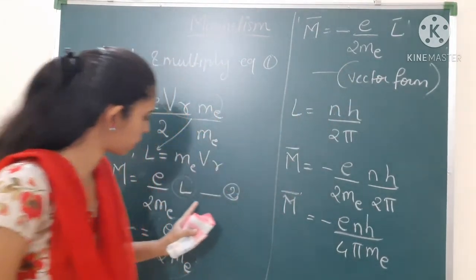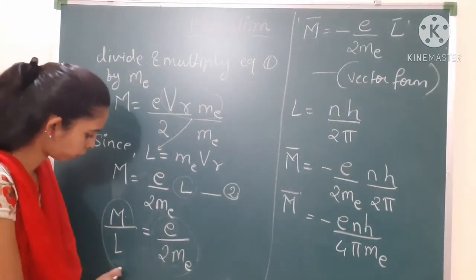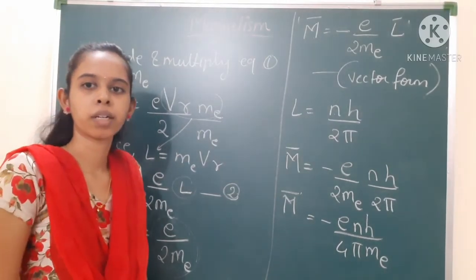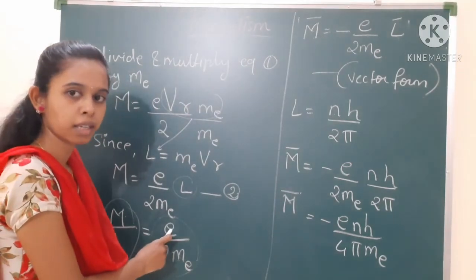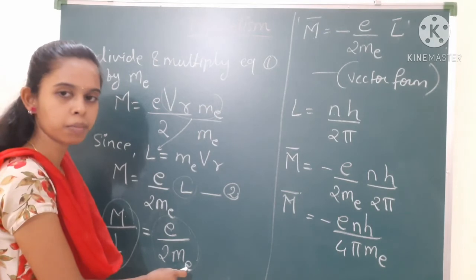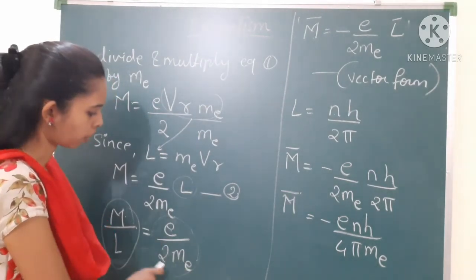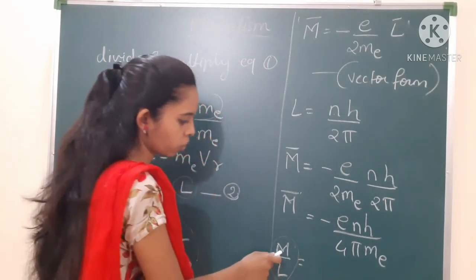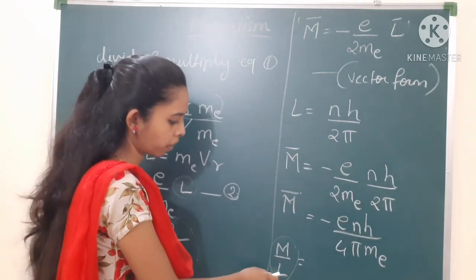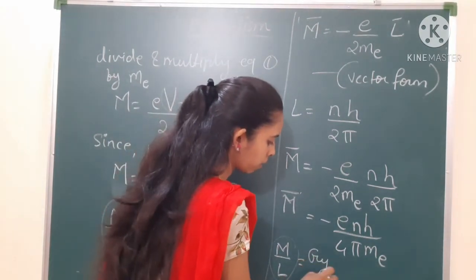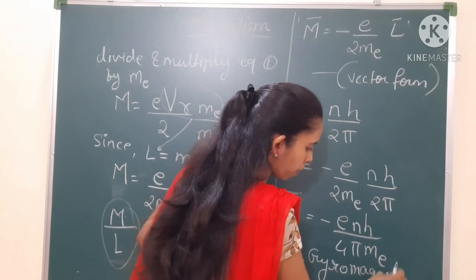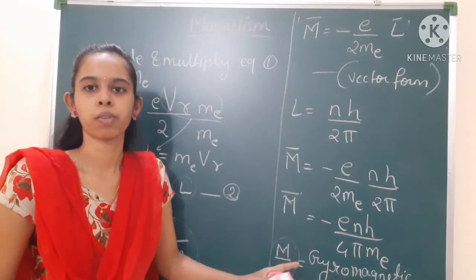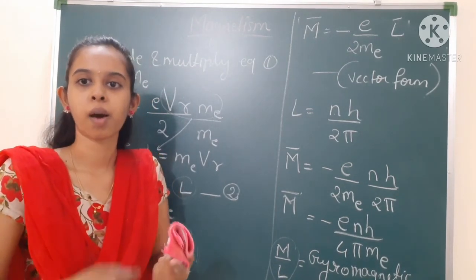The gyromagnetic ratio M/L is the ratio of magnetic moment to angular momentum, and it equals e/(2m). If you solve this — where e is the charge of the electron and m is the mass of the electron — you will get the constant value 8.8 × 10¹⁰. This is all about the magnetic moment of an electron moving in a circular orbit around the nucleus.